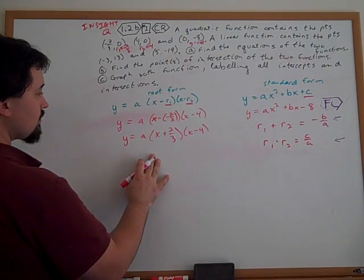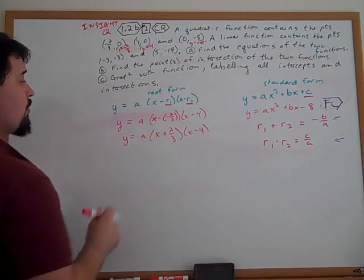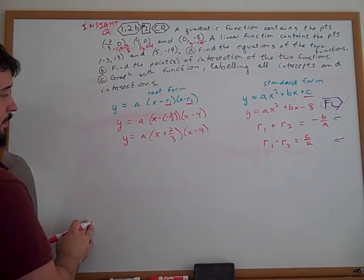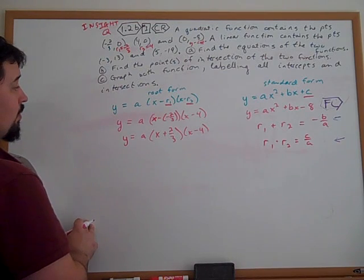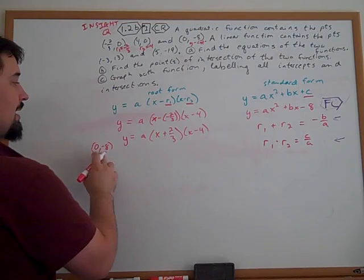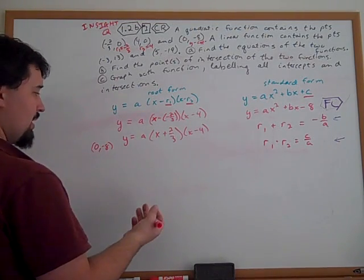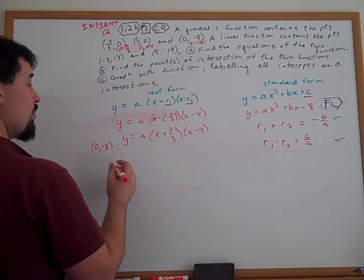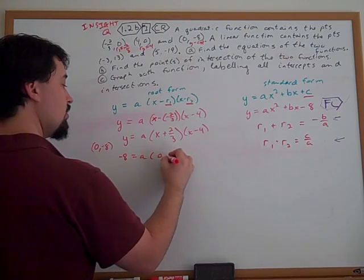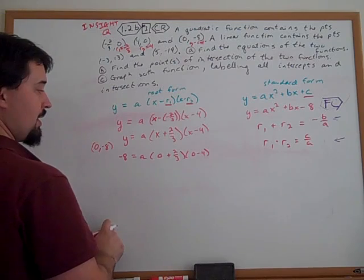So over here, we have not yet used our third point. We've already plugged in for our two roots, but we haven't yet used this y-intercept idea. Now, we know that we can plug in the point and we can go ahead and just plug it in right now, in fact. You could multiply this out first and then plug it in, but I'm just going to go ahead and plug in x and 0 right now and solve it out for a. So we have negative 8 equals a times, okay, and we get negative 8 thirds.